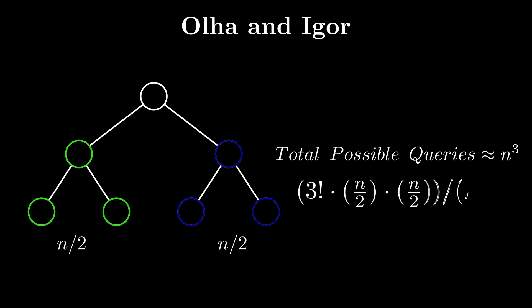Then there are 3 factorial ways to permute this around u, v, and w. Hence, the total number of ways to get the root as an answer is 3 factorial times n by 2 times n by 2. That's equal to 3n squared by 2.